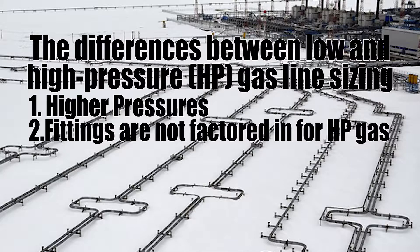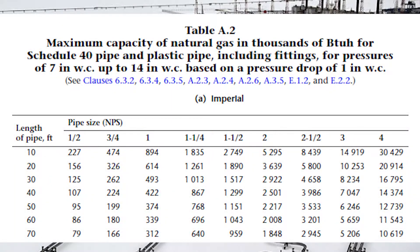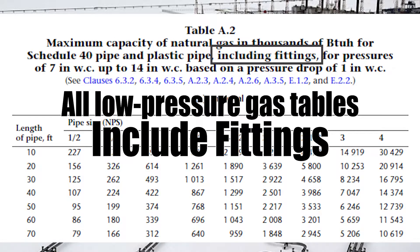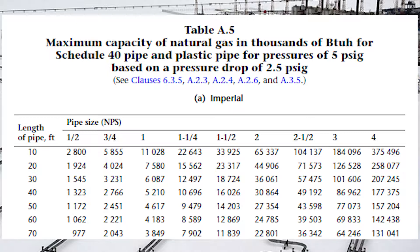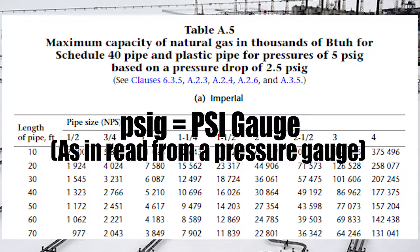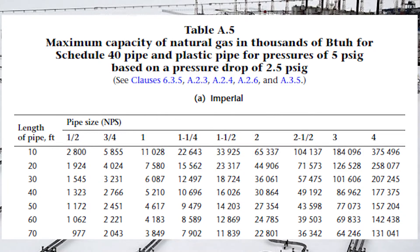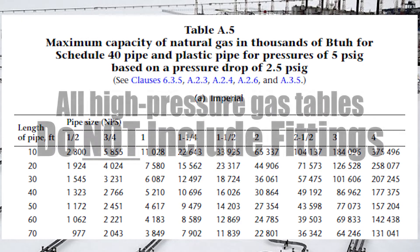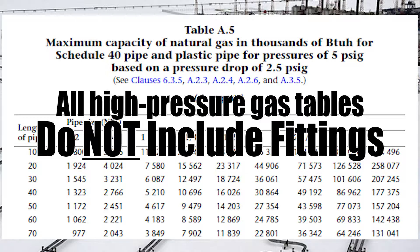The next difference comes into how we factor in fittings in the gas line for high pressure compared to low pressure. Low pressure Table A2 states maximum capacity of natural gas in thousands of BTUs for SCH 40 pipe and plastic pipe, including fittings — so all the low pressure gas tables include fittings. But Table A5, the first high pressure gas line sizing table, covers SCH 40 pipe and plastic pipe for pressures of 5 psi based on a pressure drop of 2.5 psi, and notice it doesn't mention including fittings. High pressure gas line sizing tables do not include fittings, so we have to do an extra step to factor in for them.